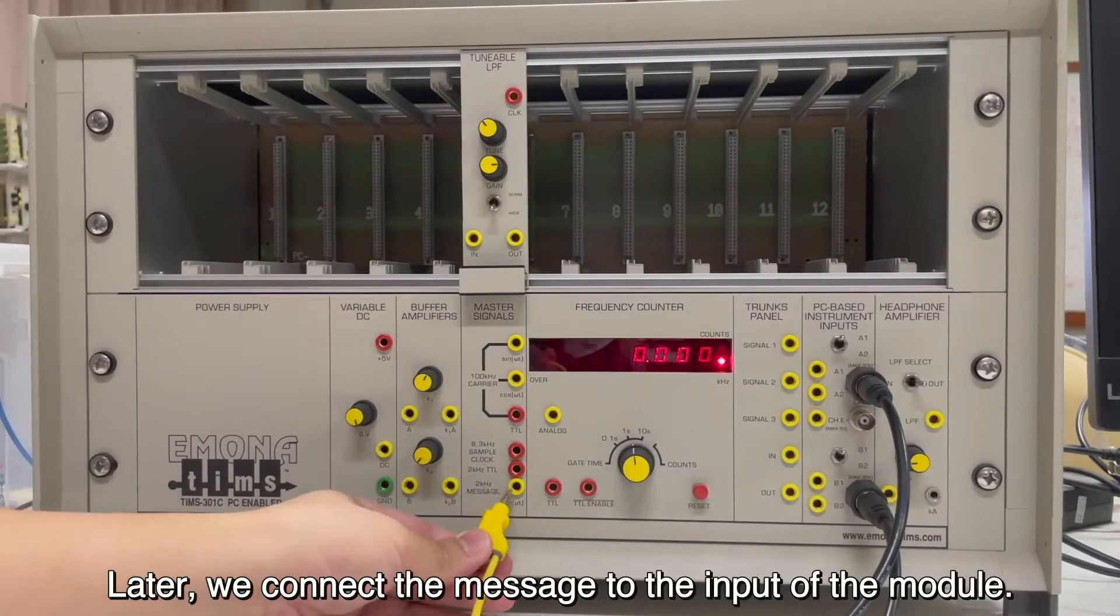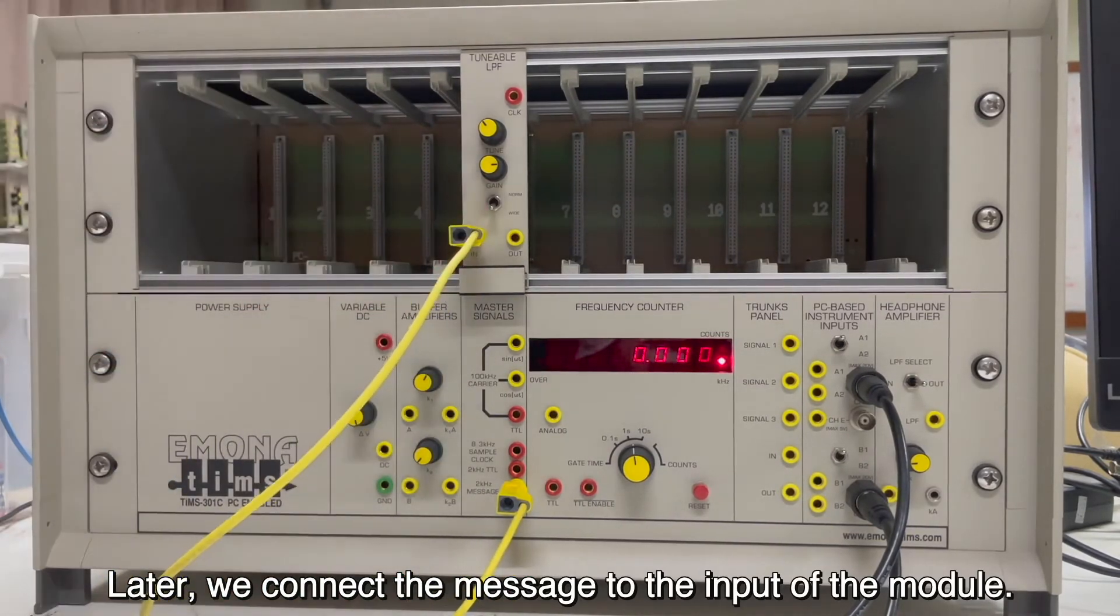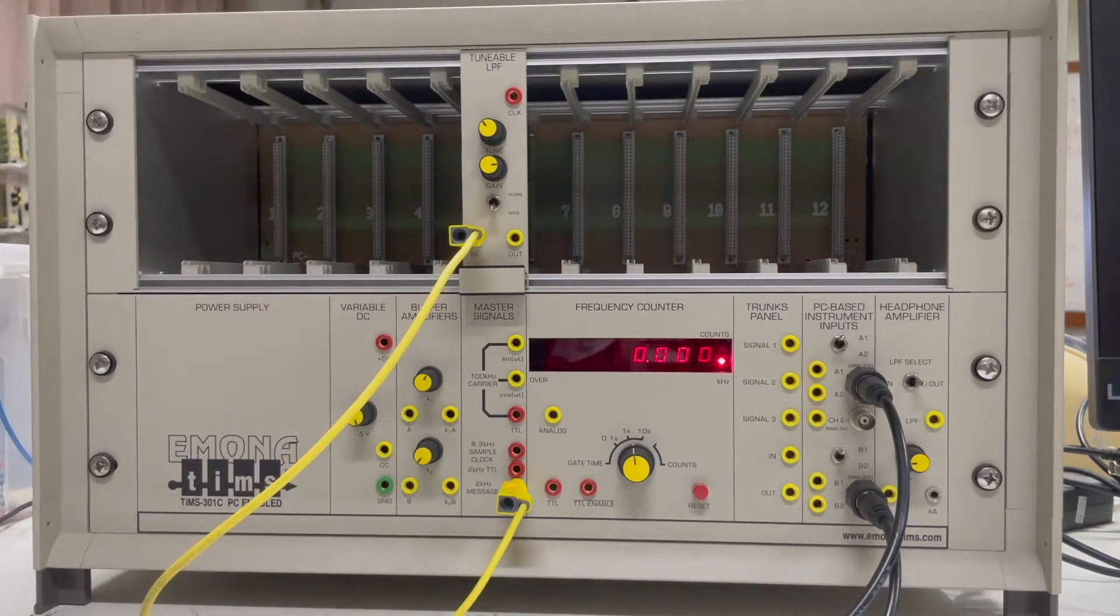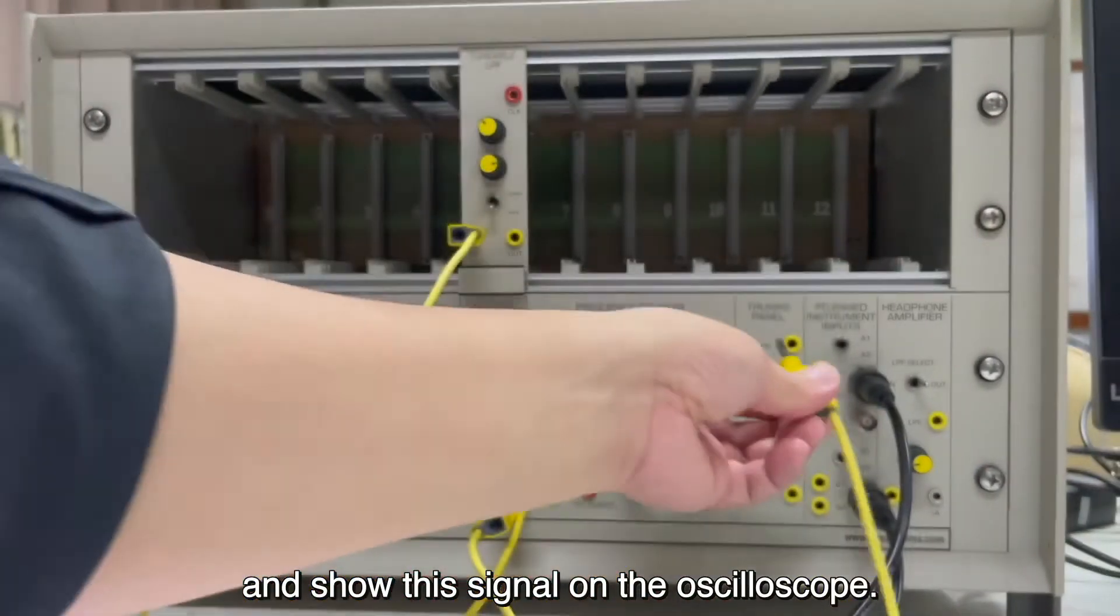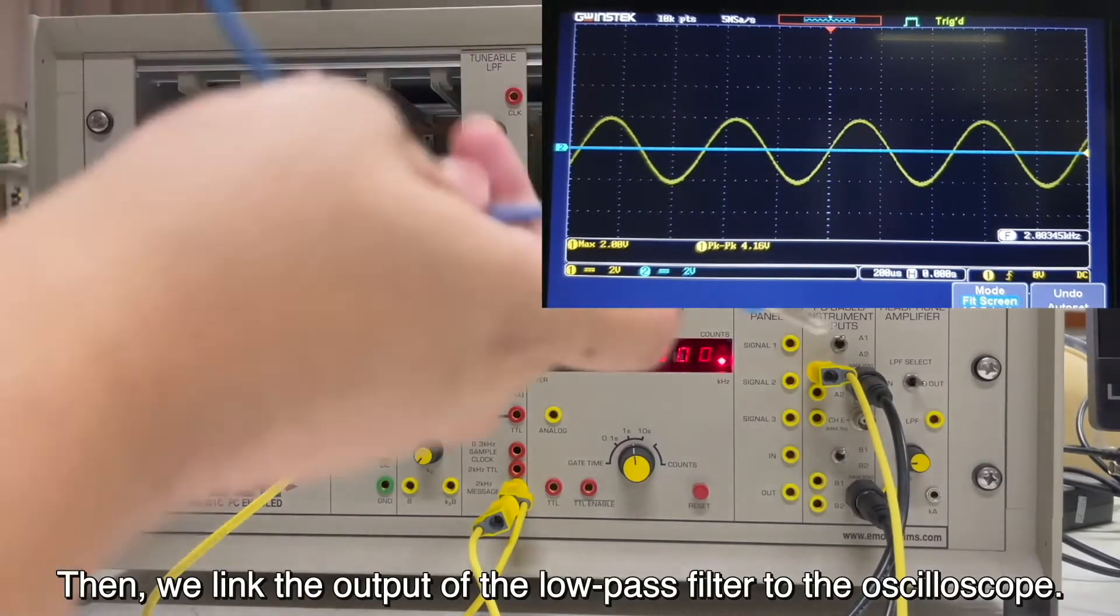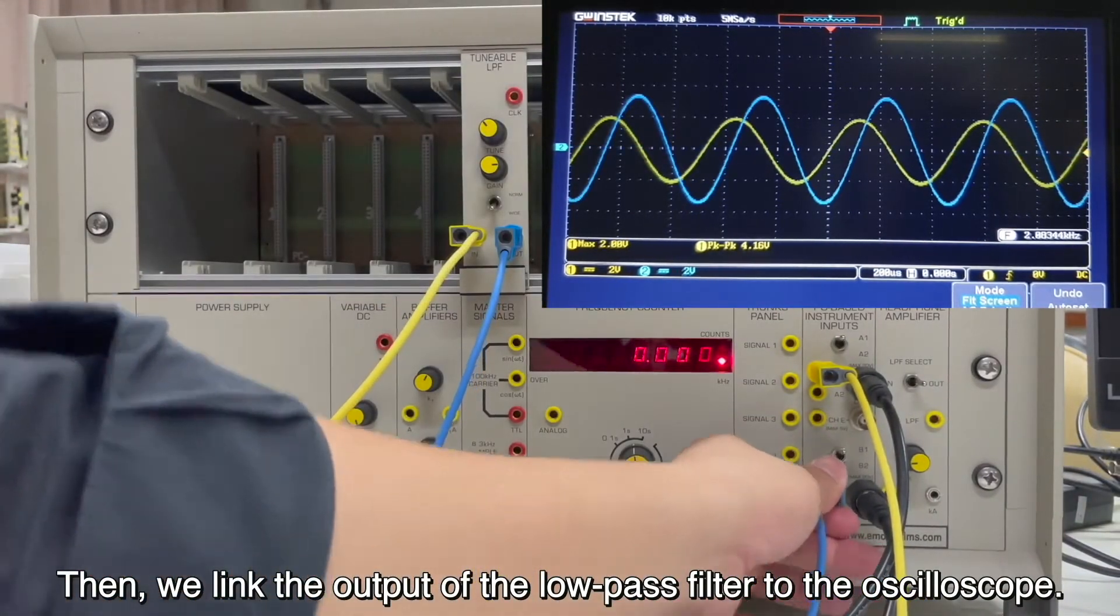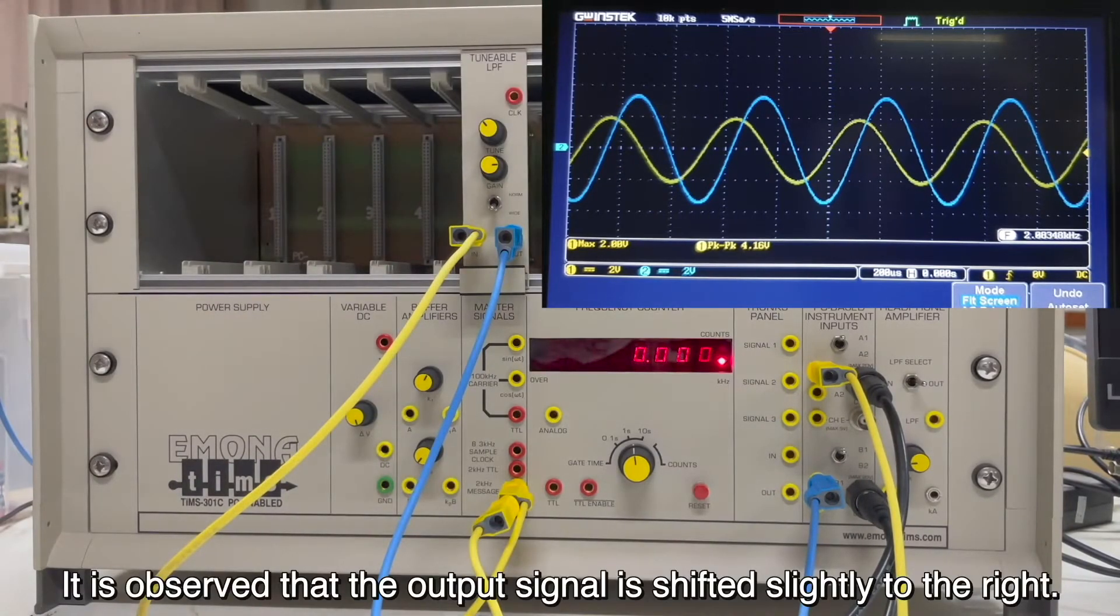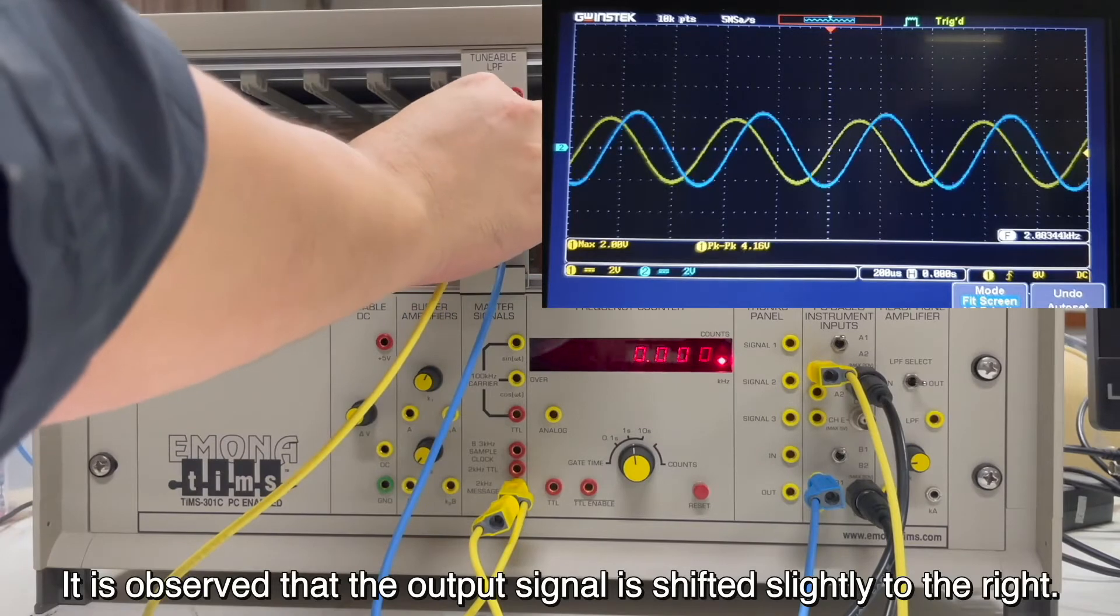Later, we connect the message to the input of the module and show this signal on the oscilloscope. Then, we link the output of the low-pass filter to the oscilloscope. It is also that the output signal is shifted slightly to the right.